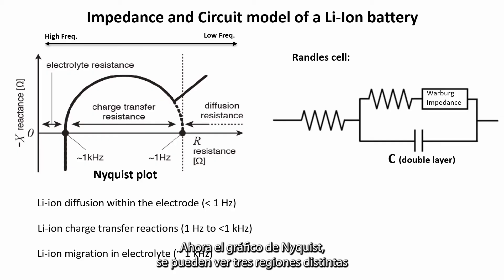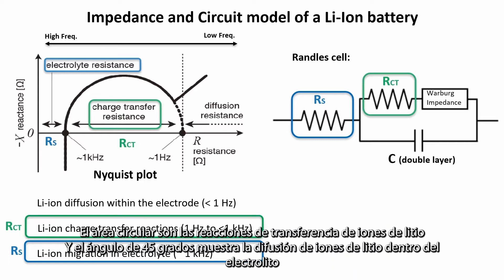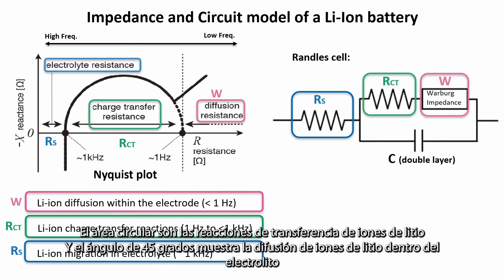In the Nyquist plot you can see three distinct regions starting with the higher frequencies. The first region is the lithium ion migration in the electrolyte. The circular area is the lithium ion charge transfer reactions, and the 45-degree angle shows the lithium ion diffusion within the electrode.